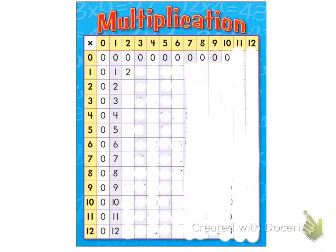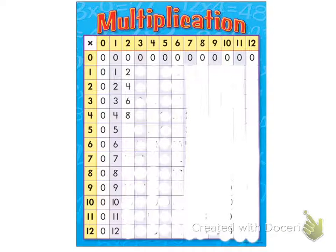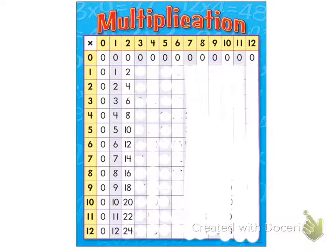We know that any number times zero is zero. So then we go: two, four, six, eight, ten, twelve, fourteen, sixteen, eighteen, twenty, twenty-two, twenty-four.